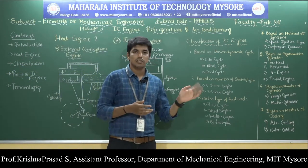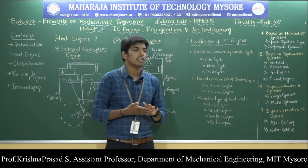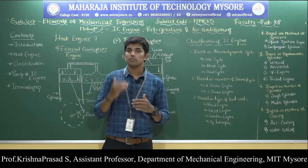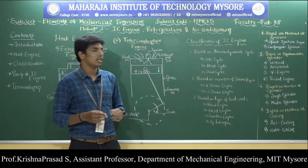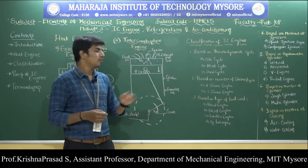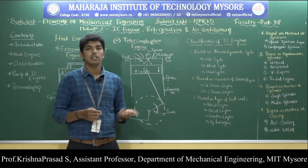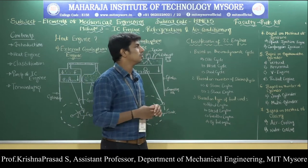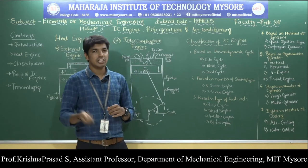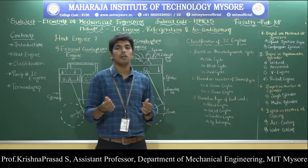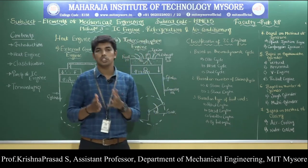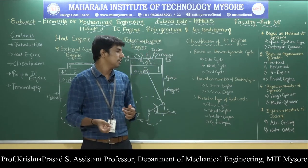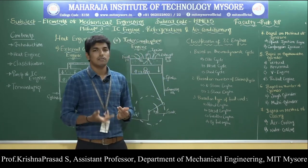To summarize the classification of IC engines: based on thermodynamic cycle — auto cycle (constant volume), diesel cycle (constant pressure), dual cycle (both). Based on strokes — four-stroke and two-stroke. Based on fuel — petrol engine, diesel engine, gasoline engine, bi-fuel engine. Based on ignition — spark ignition (spark plug) and compression ignition (fuel injector). Based on cylinder position — vertical, horizontal, V engine, radial engine. Based on number of cylinders — single and multi-cylinder. Based on cooling method — air cooling and water cooling.